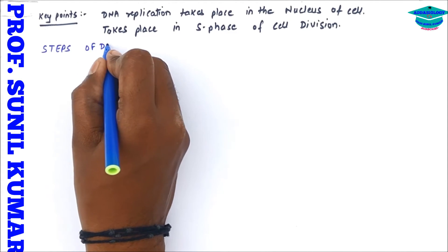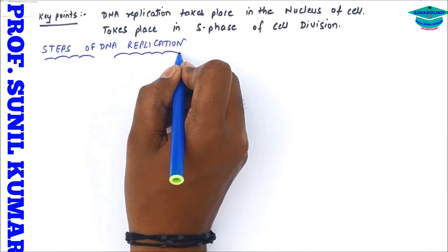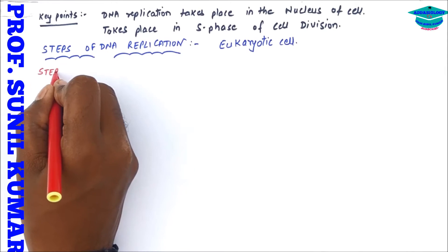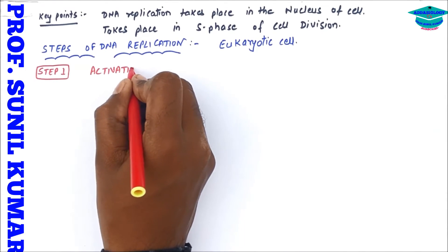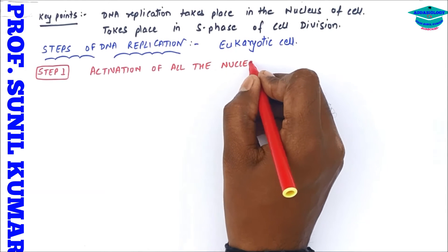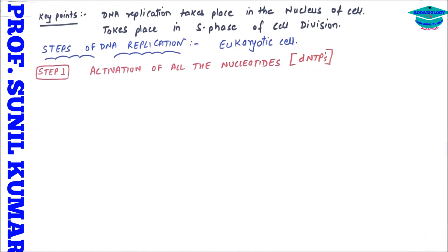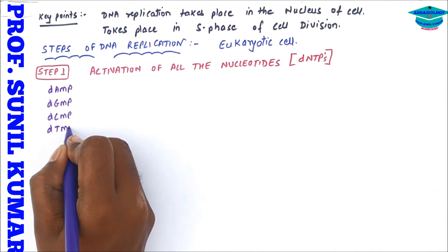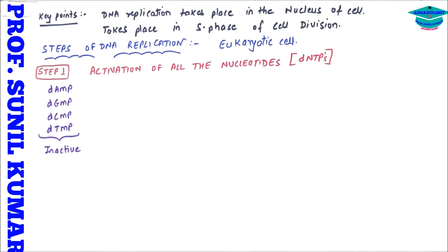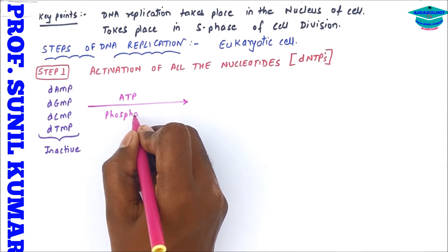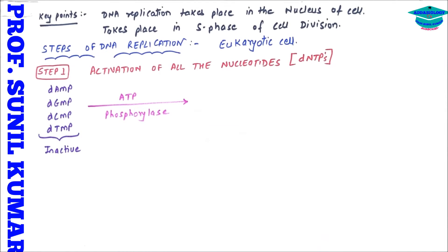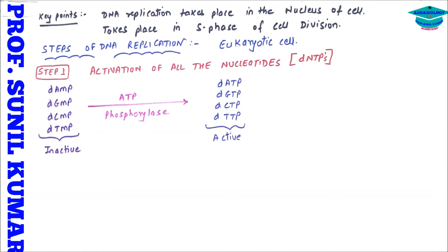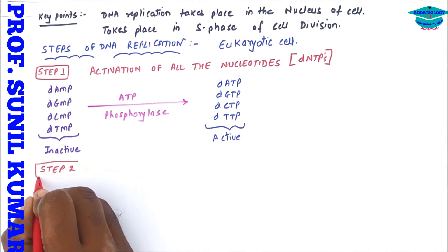Now let's go through the steps of DNA replication one by one, using eukaryotic cells. Step one is activation of all the nucleotides, called dNTPs. The inactive forms are deoxy adenine monophosphate, deoxy guanine monophosphate, and deoxy cytosine monophosphate. ATP and the enzyme phosphorylase add a phosphate group to convert these inactive forms into active nucleotides like deoxy adenine triphosphate and deoxy guanine triphosphate.